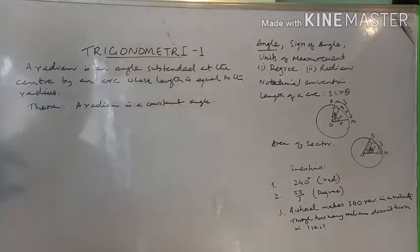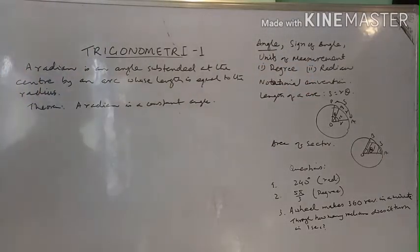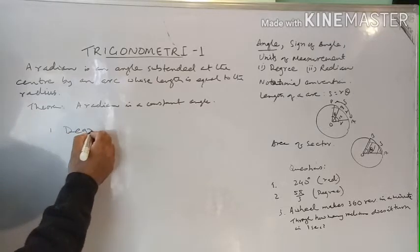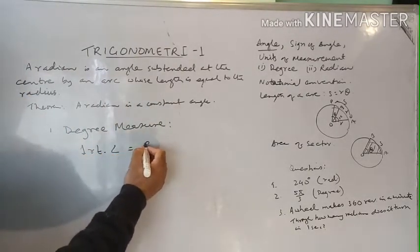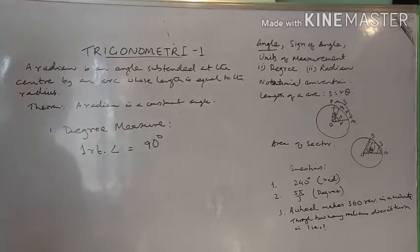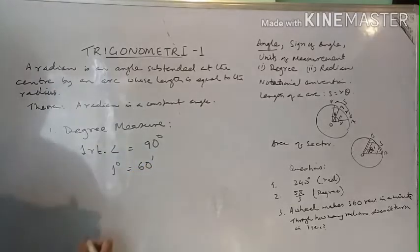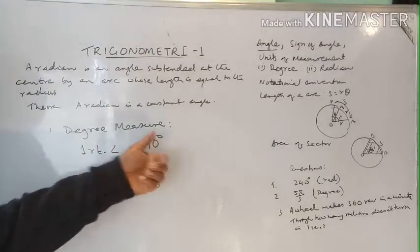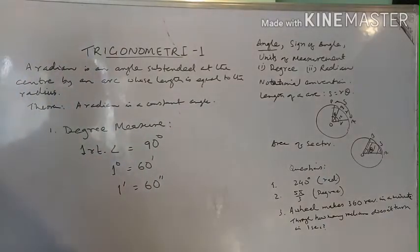Now let's look at the units of measurement. We use two methods: degree measure and radian measure. In degree measure, one right angle is equal to 90 degrees. The sub-multiples are: one degree equals 60 minutes, and one minute equals 60 seconds. You are familiar with this measure.